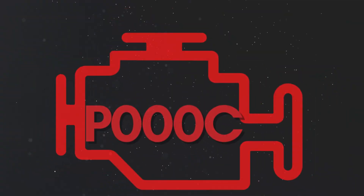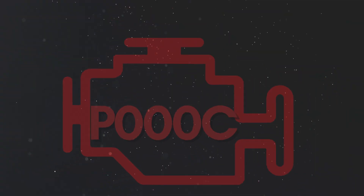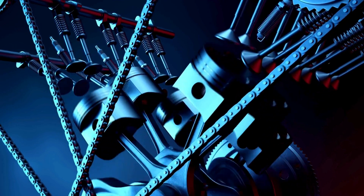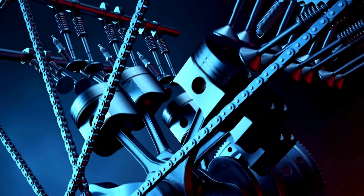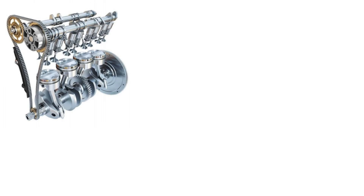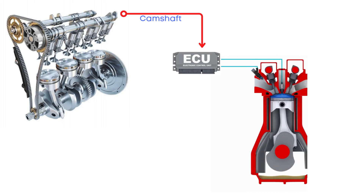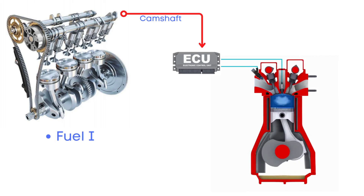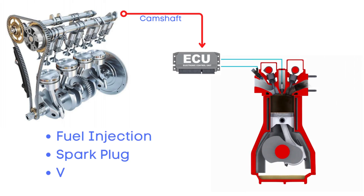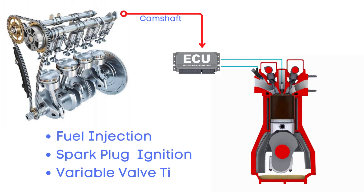Now let's learn why P000C was triggered. Your vehicle's camshaft sensor has a critical job — it measures the camshaft's position and sends that data to the engine control unit (ECU). The ECU then uses this data to control essential timing functions like fuel injection, spark plug ignition, and variable valve timing, all of which are vital for efficient engine performance.